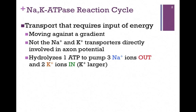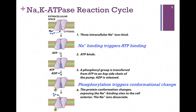We're going to look at two examples of active transport. In this case, we're moving against a gradient. We're going to look first at the sodium-potassium ATPase transporter. It's called an ATPase because it's an enzyme that hydrolyzes ATP — that's going to be our source of energy to move the ions. This is not the sodium and potassium transporters we saw in the action potential. Remember, all we did was open the doors in those cases, and the sodium ions moved with their gradients. In this case, we're actually setting up the gradients. We're going to hydrolyze one molecule of ATP, and that will give us enough energy to pump three sodium ions out of the cell and two potassium ions inside the cell.